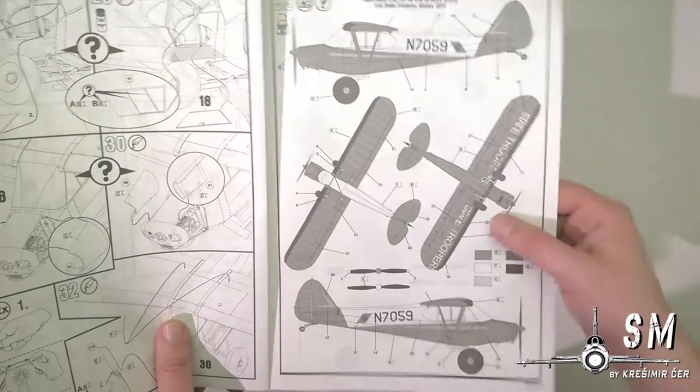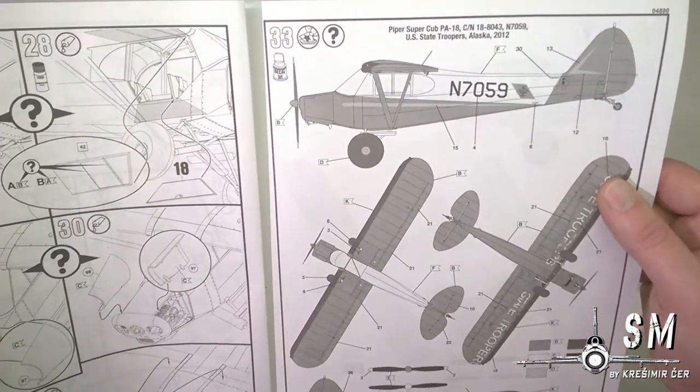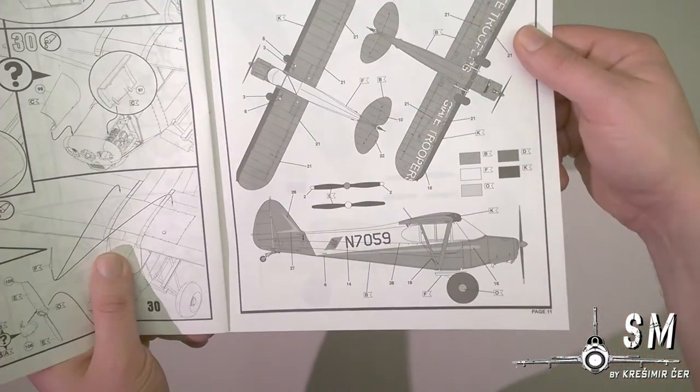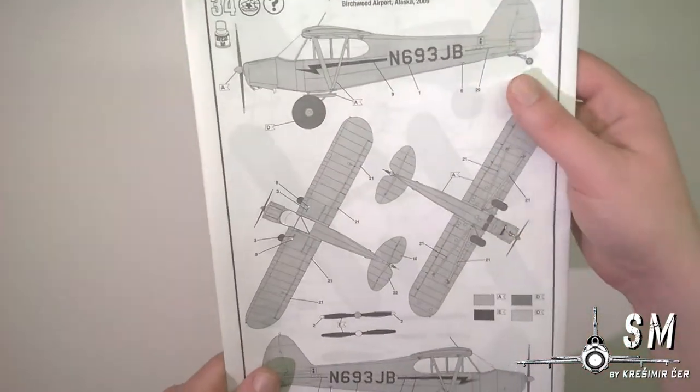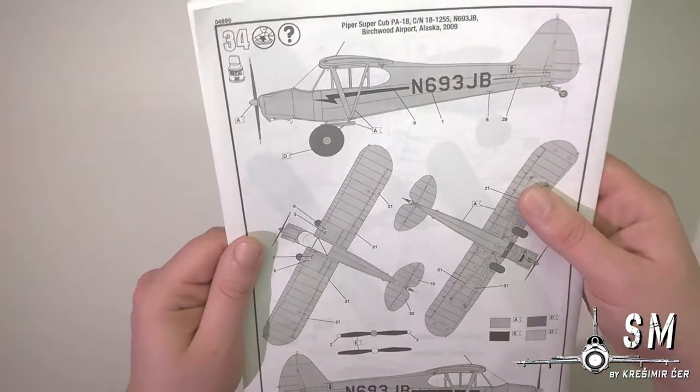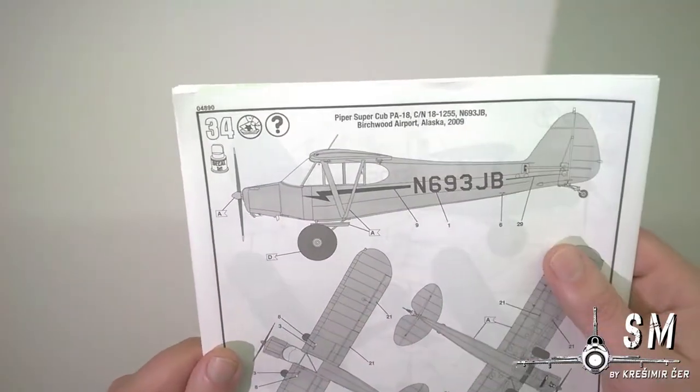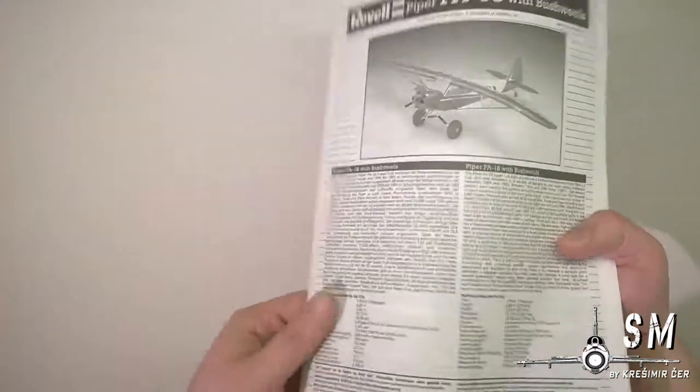Revell provided us with the paint scheme or decals for two separate aircraft. This is one from the U.S. State Troopers from Alaska, and also a civilian one, also from Alaska. I think this is a civilian registration. So let's go into the parts.